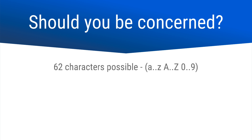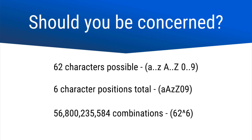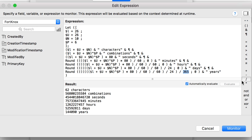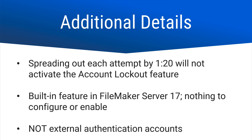Now that you know, should you be concerned? If we do the math for 62 possible characters and a 6-character password, that gives us quite a few combinations — the data viewer shows it would take a very long time to get through all combinations, and that's just with 6 characters without special characters. Adding just 5 special characters increases the years significantly, and an 8-character password means we're looking at an enormous number of years trying every 80 seconds. Spreading out each attempt by 1 minute and 20 seconds will not activate the account lockout feature. This is a built-in feature of FileMaker Server 17 — nothing to configure or enable — and it has nothing to do with external authentication accounts. This is strictly for server accounts.